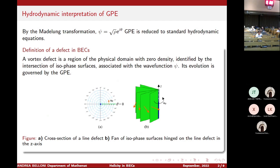Defects can be considered as vortex filaments under the Madelung transformation. In the classical context, for example the work by Moffatt and Ricca connects helicity to nodal vortex configurations. For this reason we can think that helicity could have a strong role also in the context of vortex filaments.